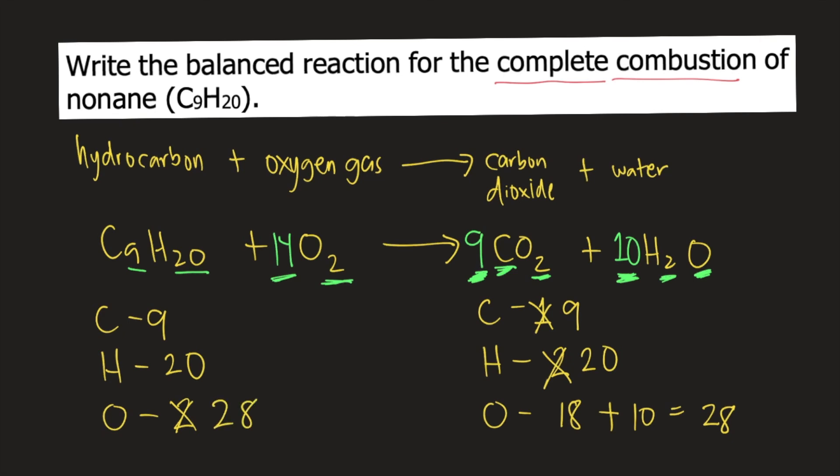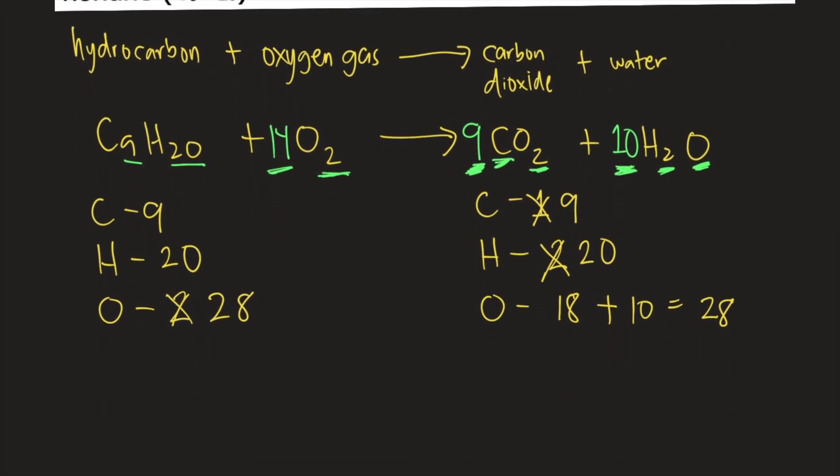Now that all elements are balanced, that means that the reaction is also balanced. So the answer to this question is C9H20 plus 14O2 forms 9CO2 plus 10H2O.